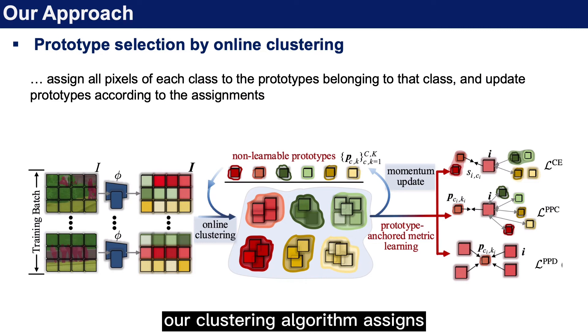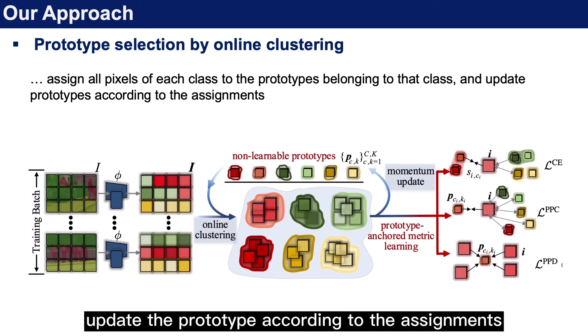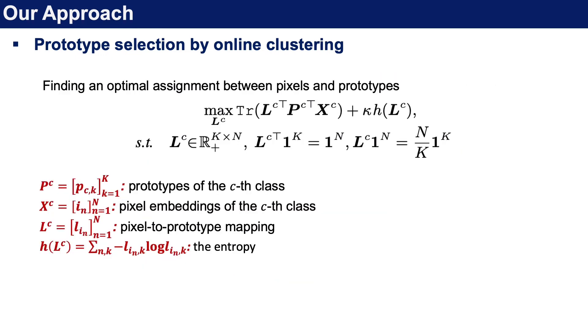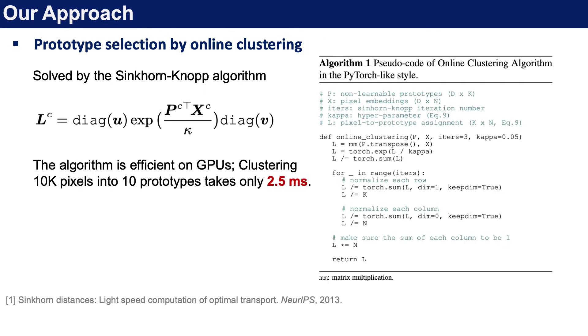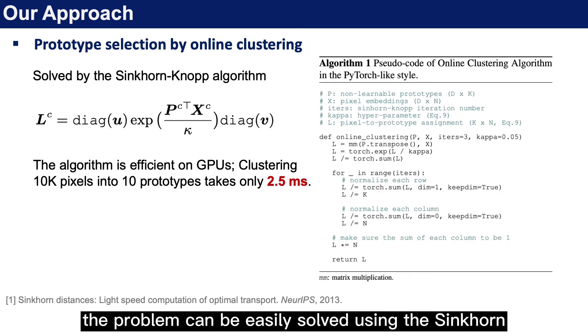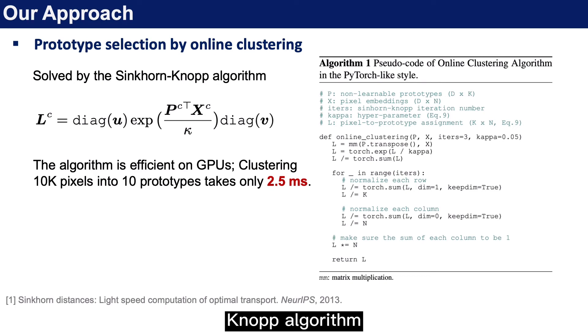Our clustering algorithm assigns all pixels of each class to the prototypes belonging to that class, and then updates the prototypes according to the assignment. We achieve this by solving an optimization problem to maximize the similarity between pixel embeddings and the prototypes. The problem can be easily solved using the Sinkhorn-Knopp algorithm.